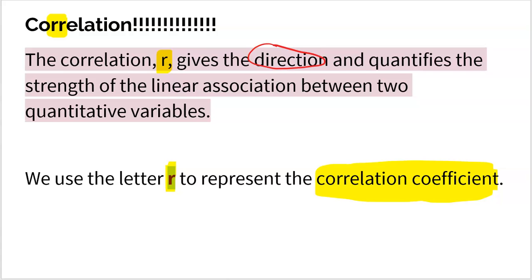Now, R gives direction. So it will be positive if your data is going up, it will be negative if your data is going down. It also quantifies the strength only in linear associations. So if you do see a curve in your data, you would never use correlation because we only use correlation to measure the strength of a linear association. And the two variables have to both be quantitative variables. If one or both are categorical, you would never use correlation.